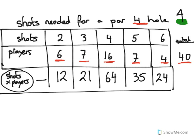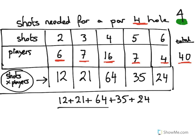This is actually the total number of shots if we just add all these sums up together. So we get 12 plus 21 plus 64 plus 35 plus 24. I don't seem to like 24 today. Plus 24.